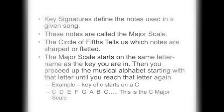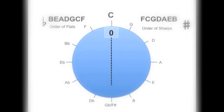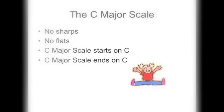Here's your circle of fifths — old friend. By now you should recognize it. Key signatures define the notes used in a given song; these notes are called the major scale. The circle of fifths tells us which notes are sharp or flatted. The major scale starts on the same letter name as the key you're in. For instance, if you're in the key of C, your first note is C, then you proceed up the musical alphabet until you get to C again. Notice there's no sharps or flats — and you see the zero underneath the C on the circle.